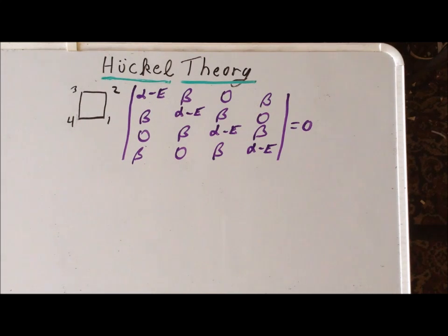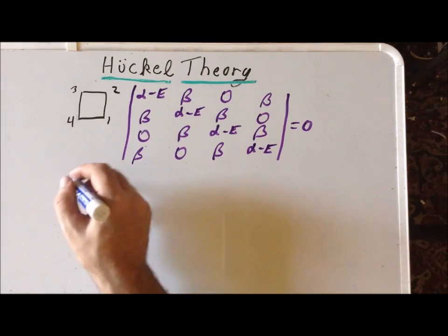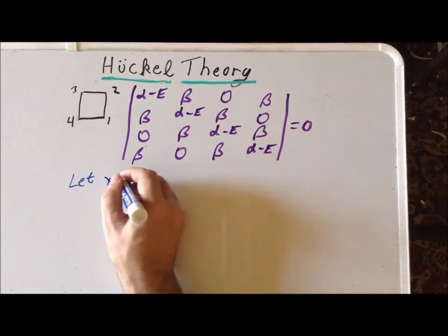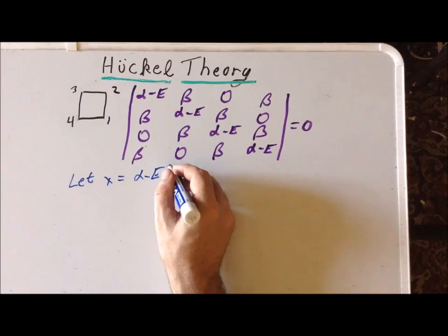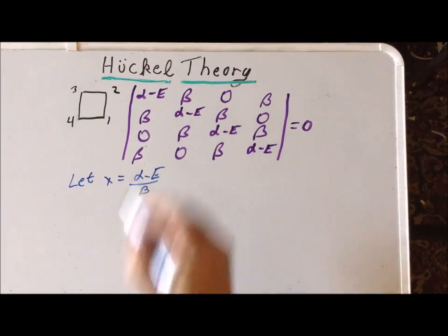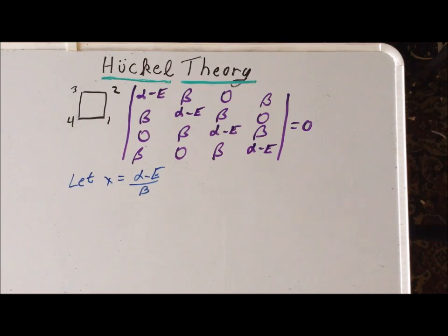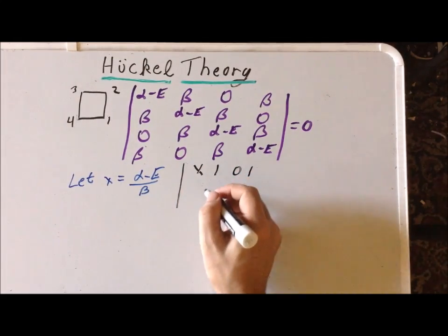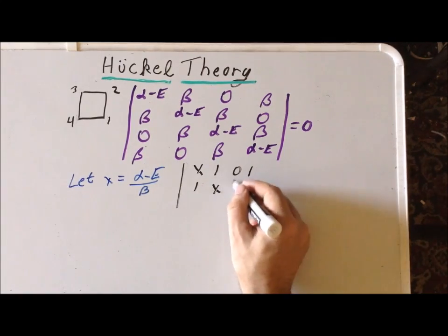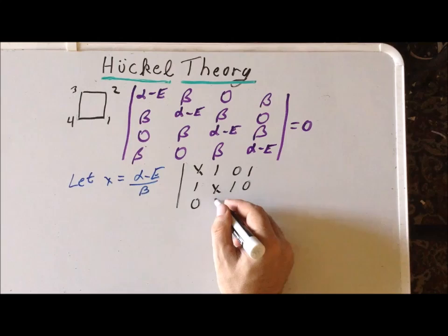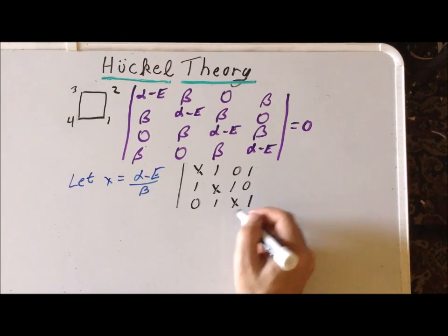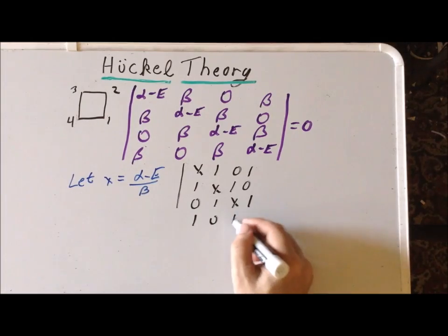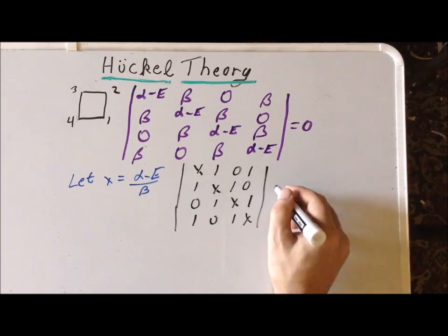Next, we're going to use our trick: we divide through by beta in each case and let x equal alpha minus the energy divided by beta. This allows us to rewrite the secular determinant in an easier form. So we can write it as: x, 1, 0, 1 / 1, x, 1, 0 / 0, 1, x, 1 / 1, 0, 1, x — set equal to 0.